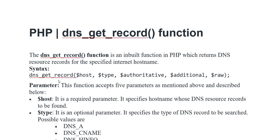Syntax: dns_get_record, variable host, type, variable authoritative, additional, raw put kia gaya. Parameters: function has five parameters mentioned. First is variable host — a required parameter specifying the host name for which DNS resource records are found.